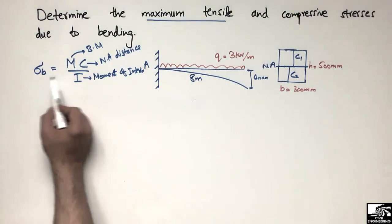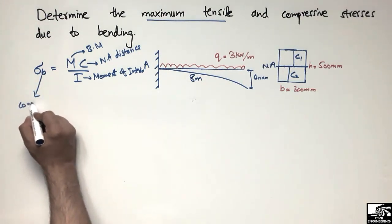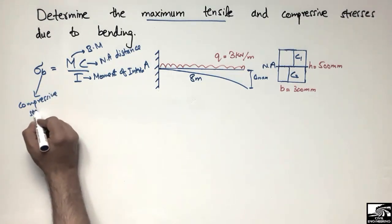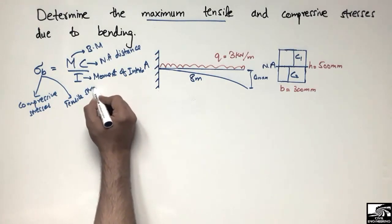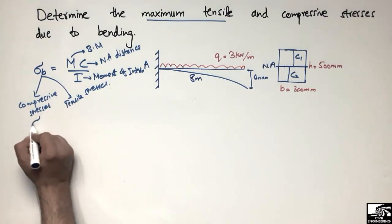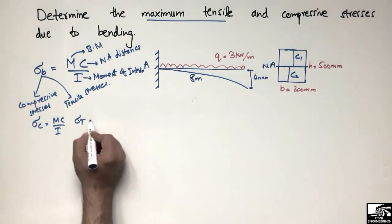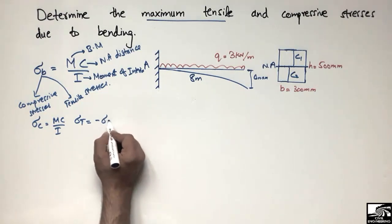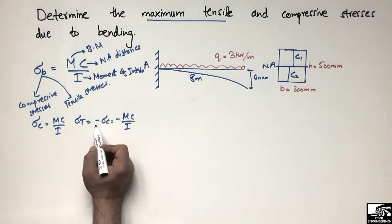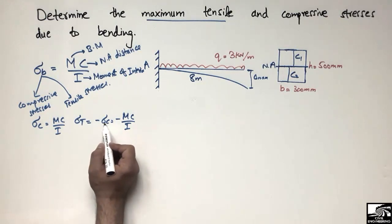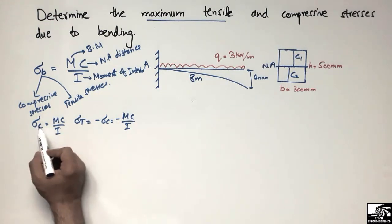Bending stresses have two types: compressive stresses and tensile stresses. To find the compressive stress we use σ_c = Mc/I, while the tensile stress is σ_t = −σ_c = −Mc/I. These two stresses have the same magnitude but different signs, so σ_t = −σ_c.